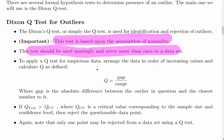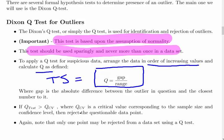To apply a Q test for suspicious data, arrange the data set in ascending order of increasing values and calculate the test statistic as follows: TS = gap / range. The gap here is the absolute difference between the outlier in question and the closest number to it.